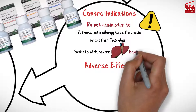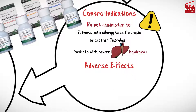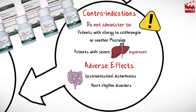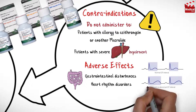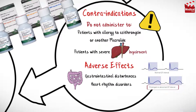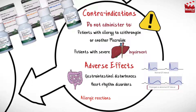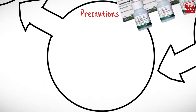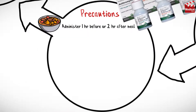Azithromycin should not be administered to patients with allergy to azithromycin or another macrolide, or to patients with severe hepatic impairment. It may cause gastrointestinal disturbances, heart rhythm disorders, QT prolongation, and allergic reactions — sometimes severe. In case of allergic reactions, it should be stopped immediately.